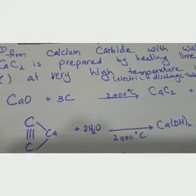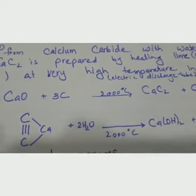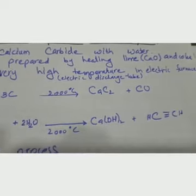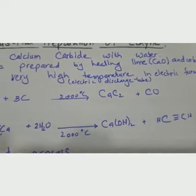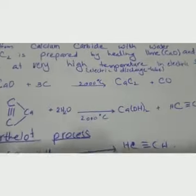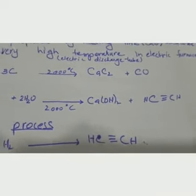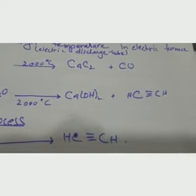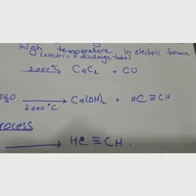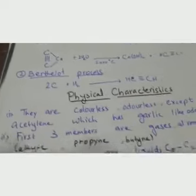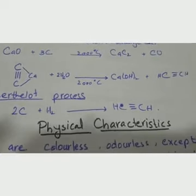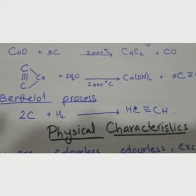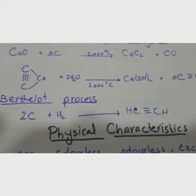Calcium oxide is introduced from one side and carbon from the other in the electric discharge tube. Calcium carbide and carbon monoxide are formed. Then calcium carbide is treated with water — it reacts with moisture to give calcium hydroxide and acetylene gas, which is collected and filled into cylinders.